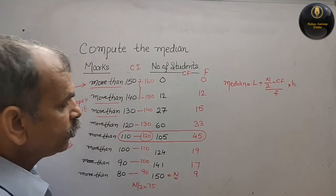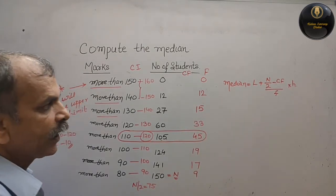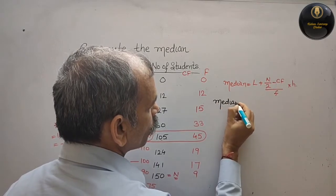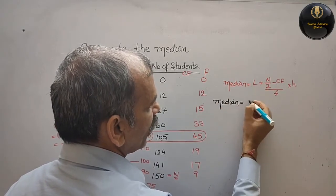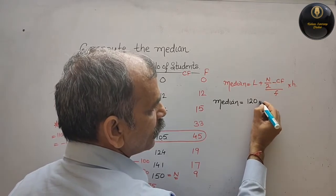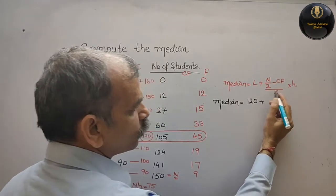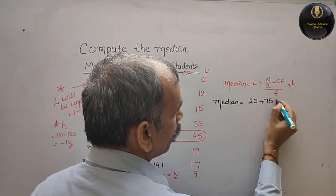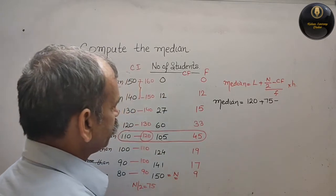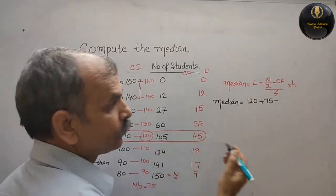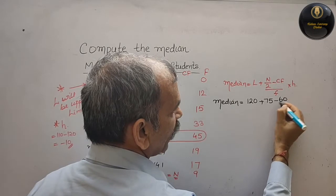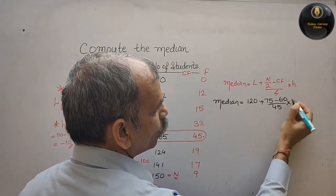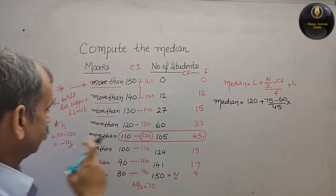So now we will put it. The median is equal to, is equal to L is 120, lower limit, plus N by 2 is 75, 75 minus CF. CF is your how much? 60, by F. F is 45, into H. H is minus 10, minus 10.